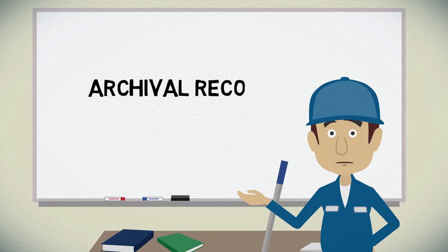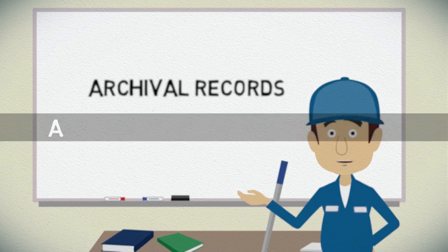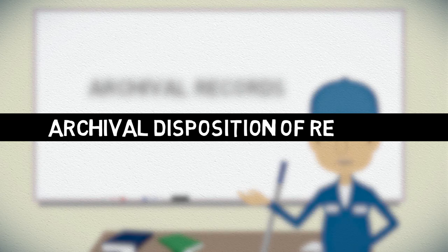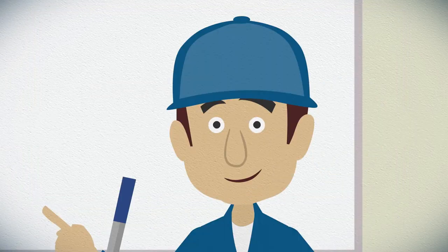But there are a few types of records that need to be retained. Those records are considered archival. Let's talk about what we have all been waiting for, the archival disposition of records. Archival records are retained permanently as historical records of the university. Sounds important, right? Well, they are.